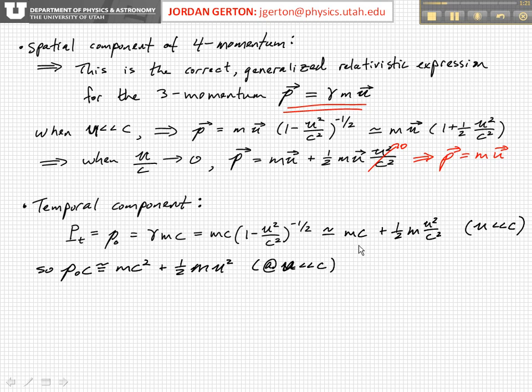Now if we multiply p sub 0 by c, we get p sub 0 c is approximately equal to mc squared plus 1 half mu squared for very slow velocities, u much less than c.